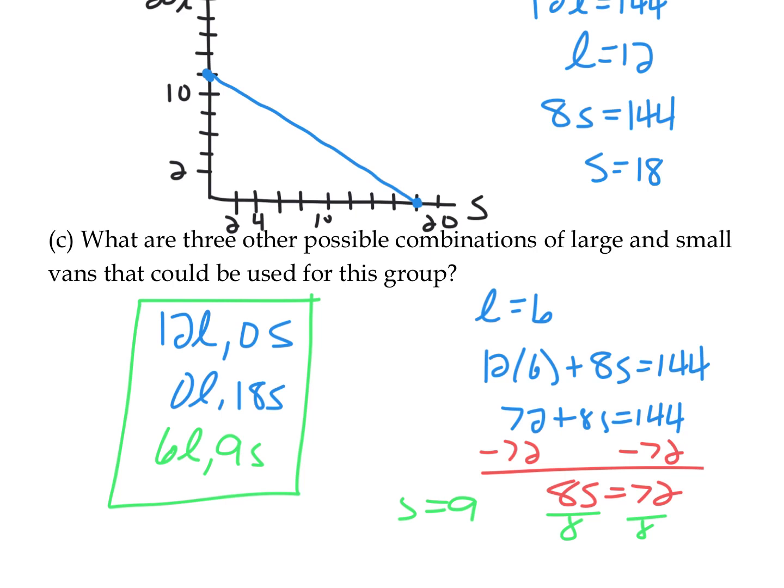So standard form is ax plus by equals c. To get there: start with the slope, write point-slope form, simplify to slope-intercept form, and then get x and y on the same side of the equal sign. Keep in mind that equivalent equations require doing the same thing on both sides. Remember horizontal and vertical lines, and keep practicing those application problems so you understand how to use standard form in real-world situations.